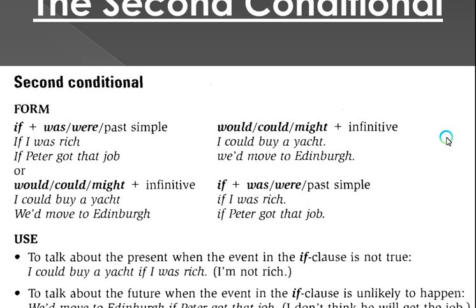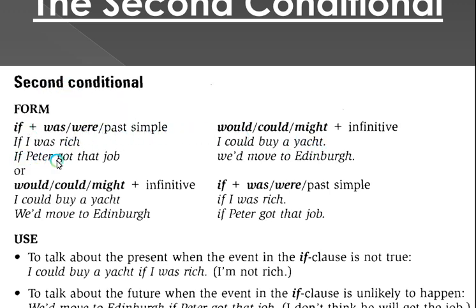Before we start, I would like to focus on the form of the second conditional first. The form is: if plus past simple (was/worked) plus would, could, or might plus infinitive. For example: 'If I was rich, I could buy a yacht.' One more: 'If Peter got that job, he would move to Edinburgh.'